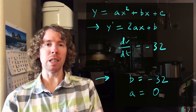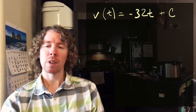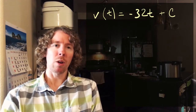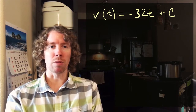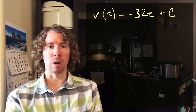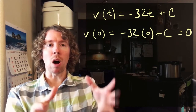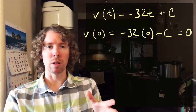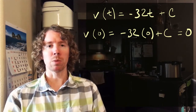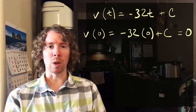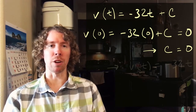So v(t) = -32t + C. We'll use the fact that v(0) = 0. Plugging in zero for t, we get negative 32 times zero plus C, and that has to equal zero. Simplifying and solving for C gives us C = 0, so the velocity function is v(t) = -32t.